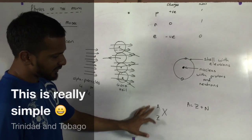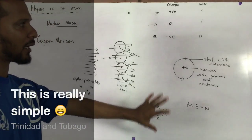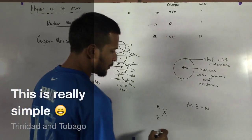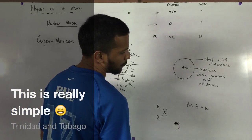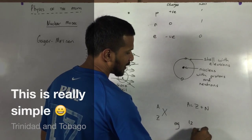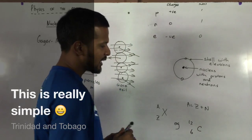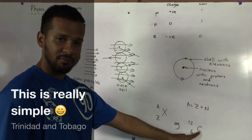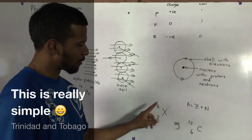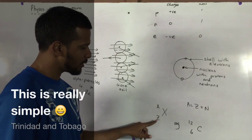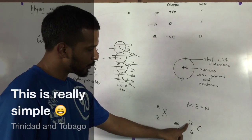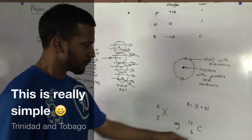And these letters represent something when we look at the periodic table. In the periodic table, for example, you will see elements. You will see elements, for example, 12, C, 6. C represents the symbol for carbon. 12 represents the nucleon number, and 6 represents the atomic number. 12 nucleon, 6 atomic.